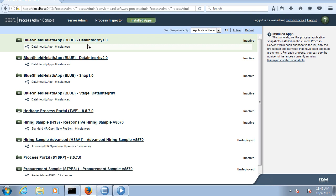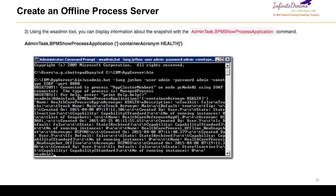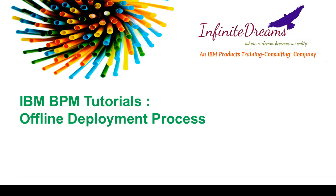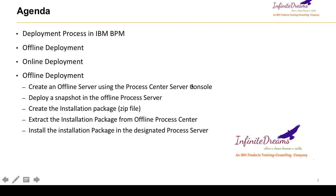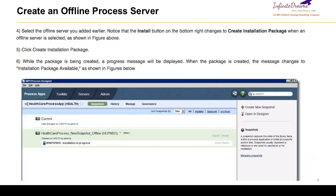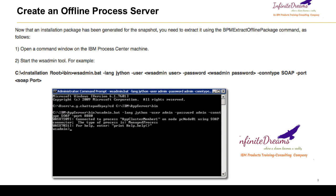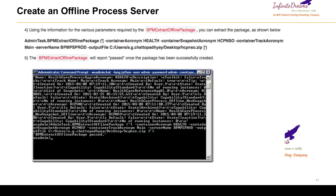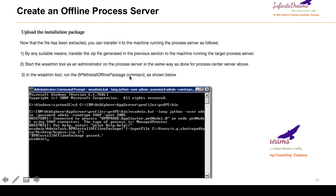The offline deployment process is very simple — it involves only these four steps: first, create an offline server; second, install the snapshot into the offline server; third, extract the deployable binary file; and fourth, install your deployable binary file to the next environment using a command. You need to remember these commands: how to start wsadmin, how to extract the offline package using BPMExtractOfflinePackage, and how to install the BPM package using BPMInstallOfflinePackage. These commands can also be found in the IBM BPM Knowledge Center. Thank you.